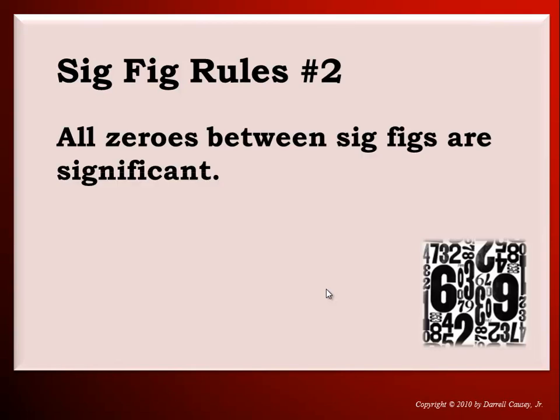Significant figure rule number two: all zeros between significant figures are significant. Here are some examples.